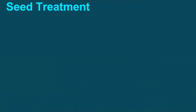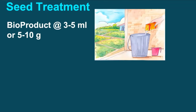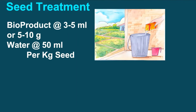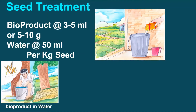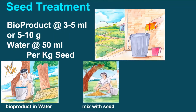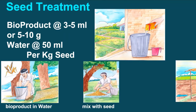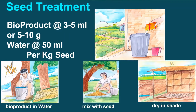The first method is seed treatment. Whenever recommended, use 3 to 5 ml of liquid or 5 to 10 grams of powder formulation mixed with 50 ml of water per kg of seed. Mix the required quantity of bioproducts in water, sprinkle the solution uniformly on the seeds and mix thoroughly. After mixing, seeds should be dried in shade for half an hour and then sown in the field.